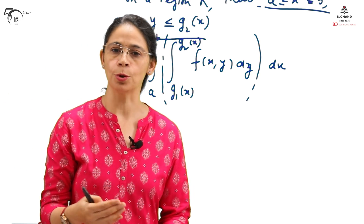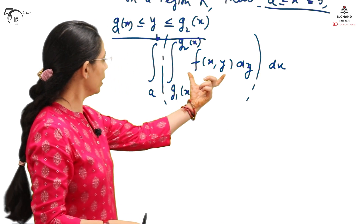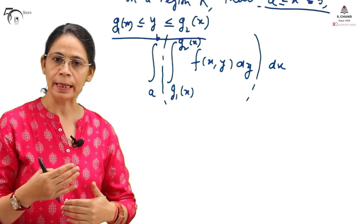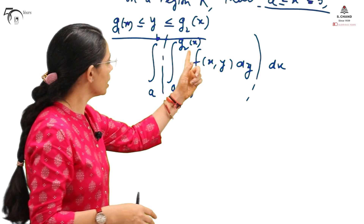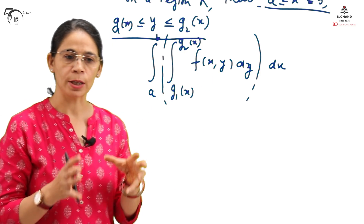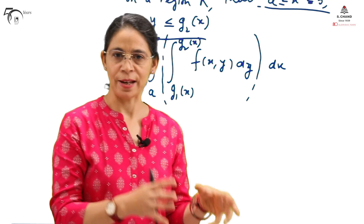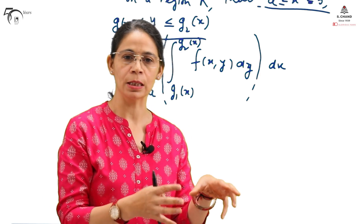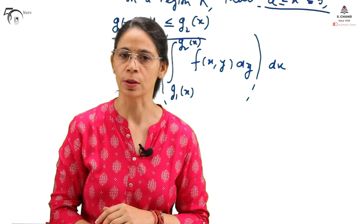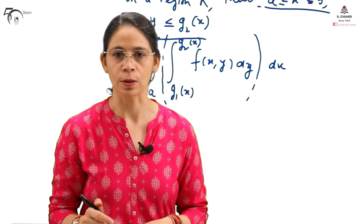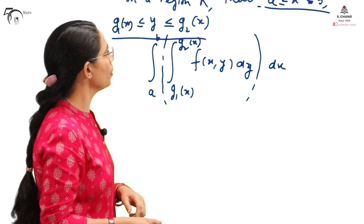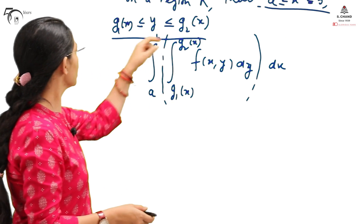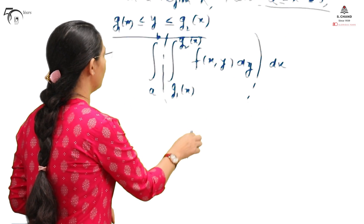The result of integrating f(x, y) with respect to y will remain as a function of x only. When that is subsequently integrated with respect to x and the constant limits are substituted, the final resultant is going to be a constant. This is the first form: constant limits for x and limits for y in terms of x.